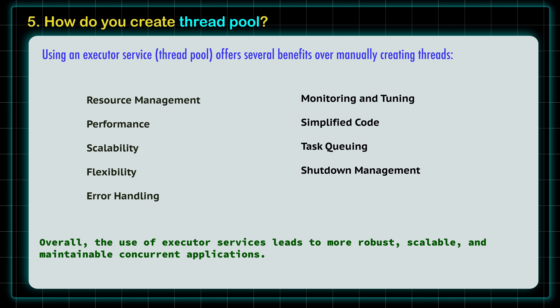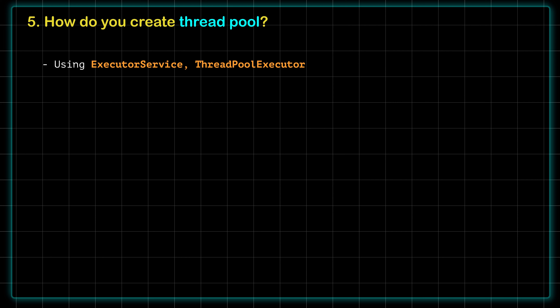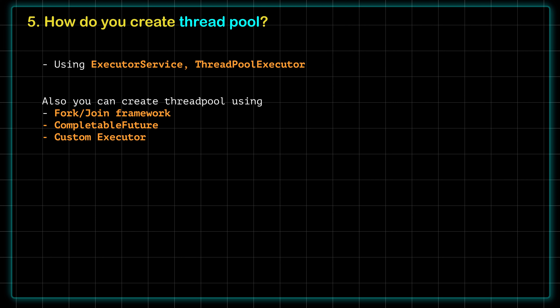The thread pool handles: resource management, performance scalability, flexibility, error handling, monitoring and tuning, simplifying the code, task queuing, and shutdown management. Overall, ExecutorService leads to more robust, scalable, and maintainable concurrent applications. Apart from ExecutorService and ThreadPoolExecutor, we also have other ways to create a thread pool, such as the Fork/Join Framework, CompletableFuture, and custom ExecutorService. That is all about the creation of a thread pool and how it works.